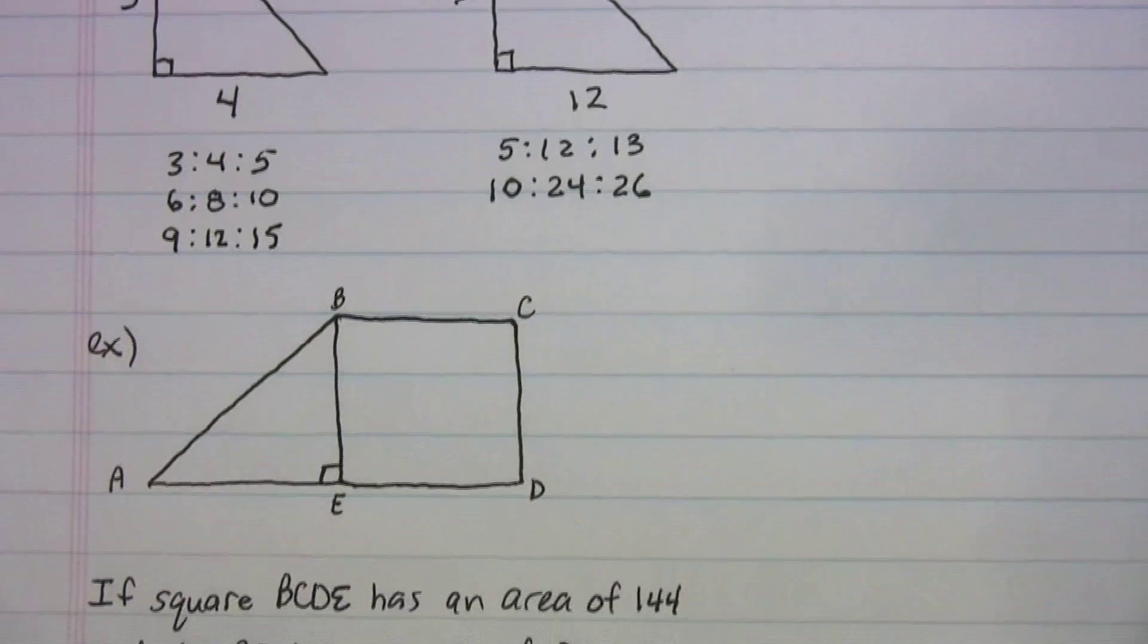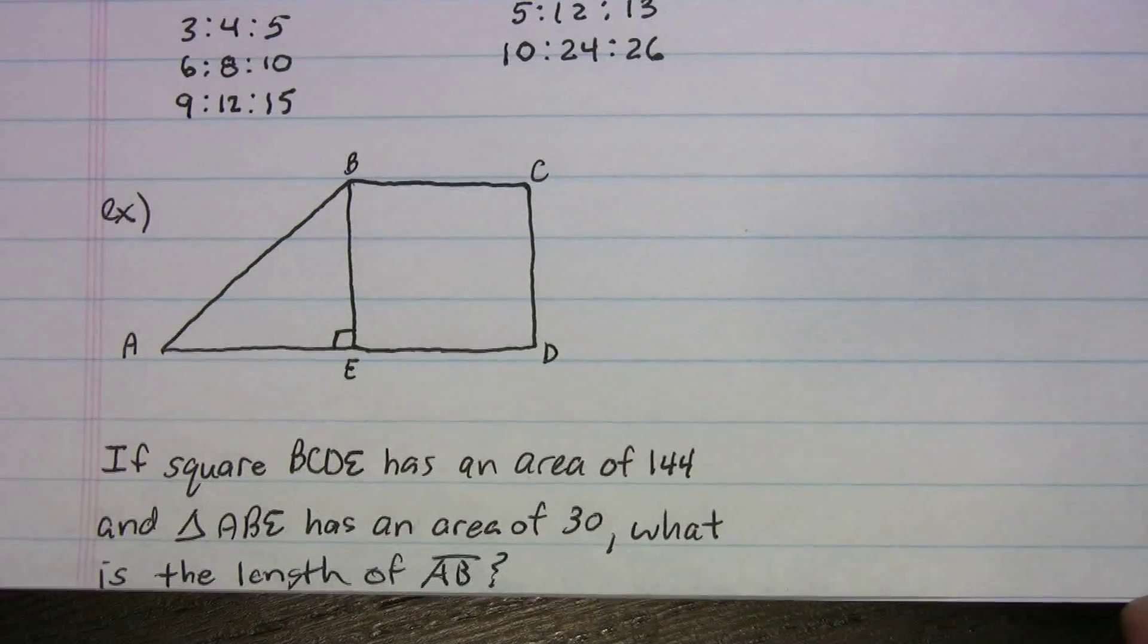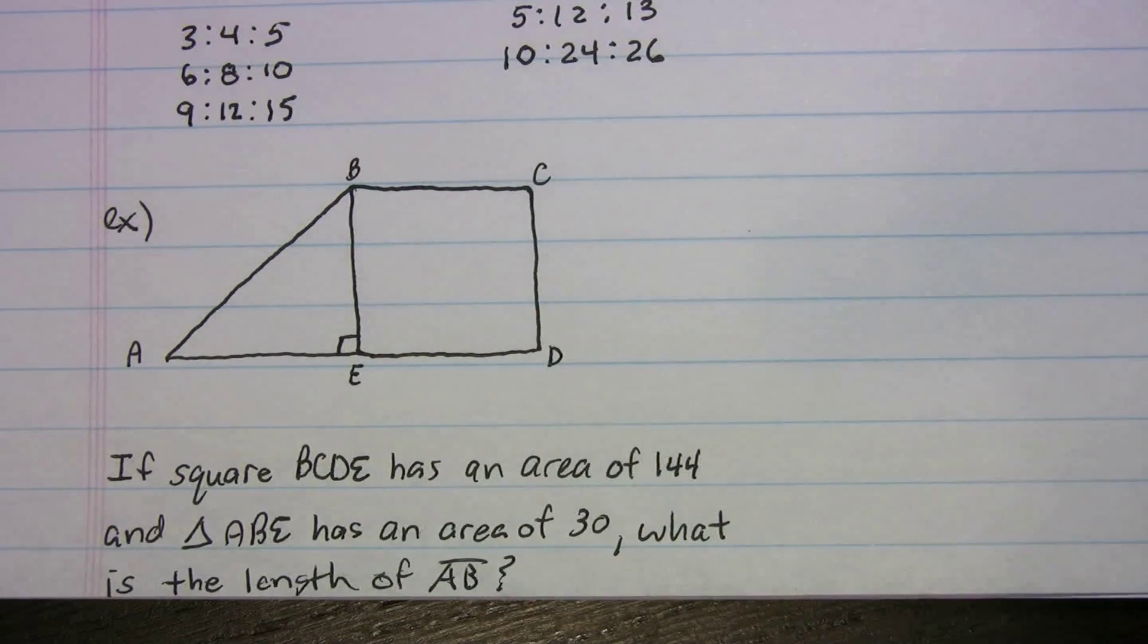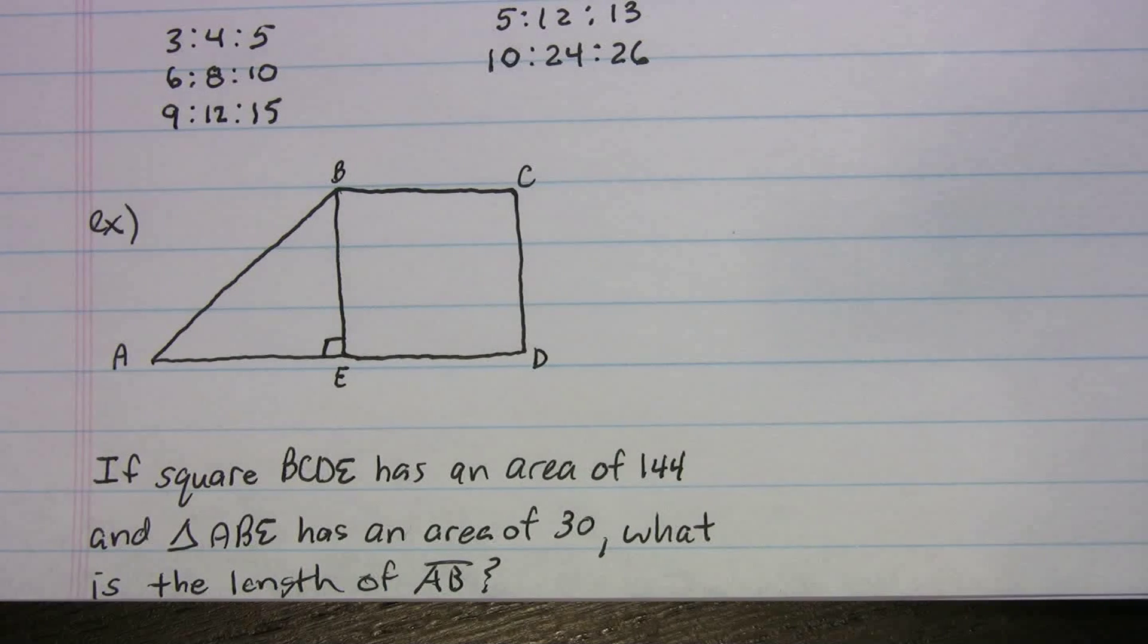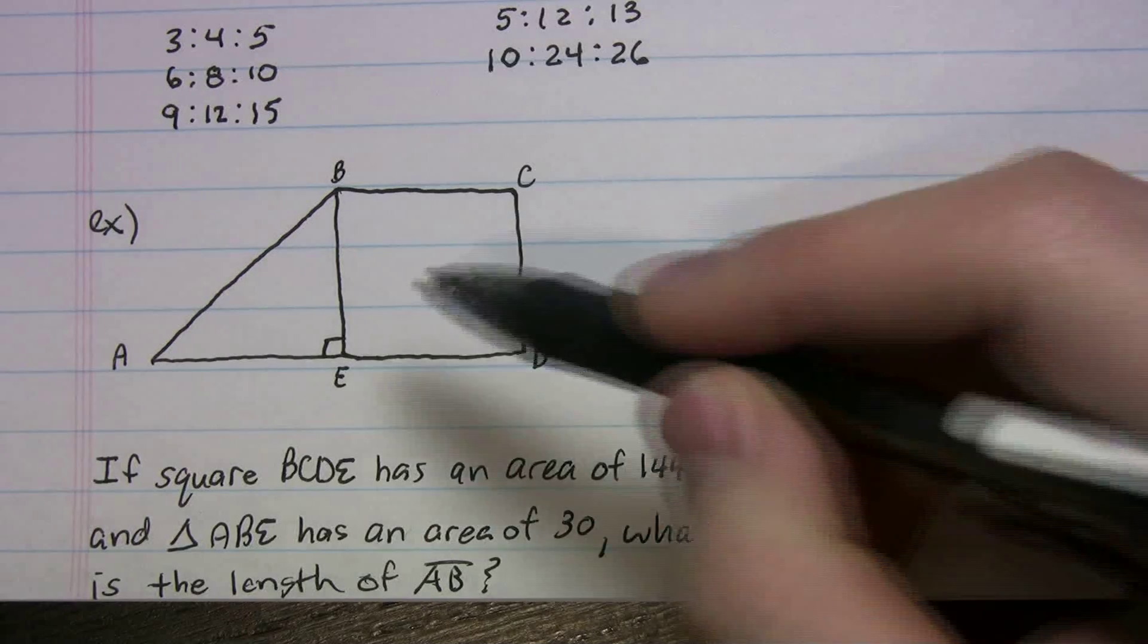So here's an example, something that's an SAT-like question. All right, so it says, if square BCDE has an area of 144 and triangle ABE has an area of 30, what is the length of AB? Now let me just move this over a little bit just to make some space.